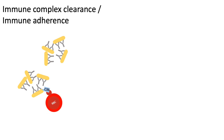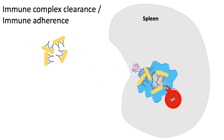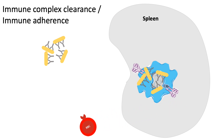Red blood cells, with their complement receptor 1 (CR1), then come and bind these complement-coated immune complexes. Red blood cells normally carry around 700 complement receptor 1 molecules. These red blood cells then transport the complexes to the spleen, where fixed tissue macrophages engulf them. The macrophages have both Fc receptors and complement receptor 1, allowing them to take up the immune complexes, after which the red blood cells return to circulation.